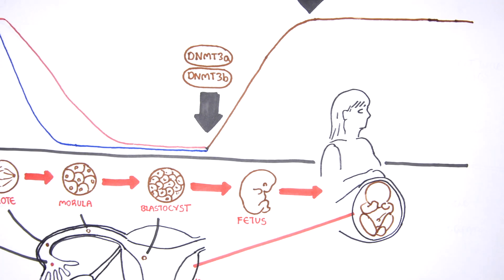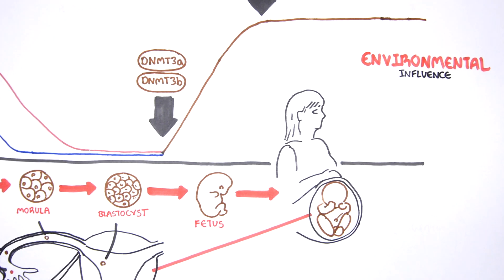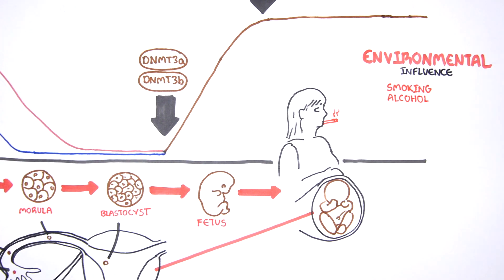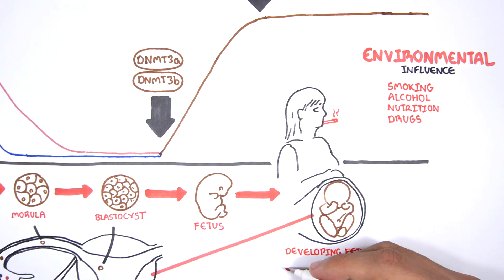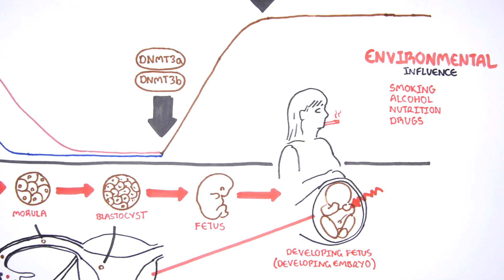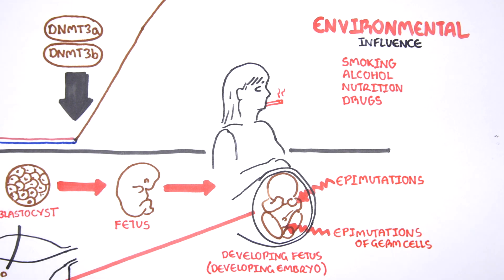For example, the mother's environmental exposure to smoke, alcohol, nutrition, and drugs may lead to random epimutations in the developing embryo, and even in the germ cells of the developing embryo.